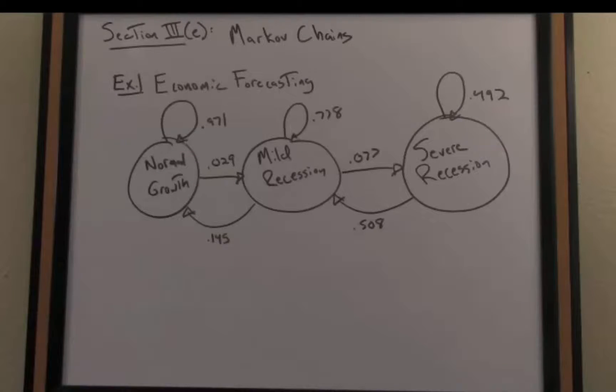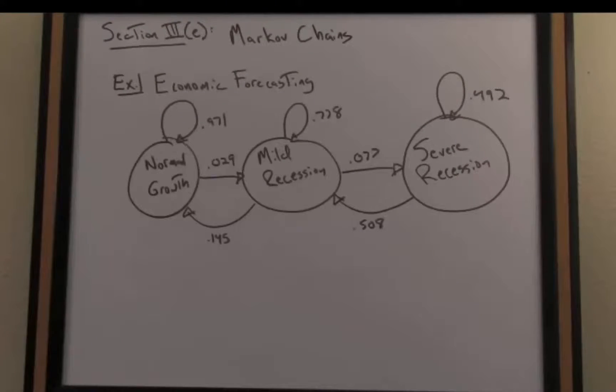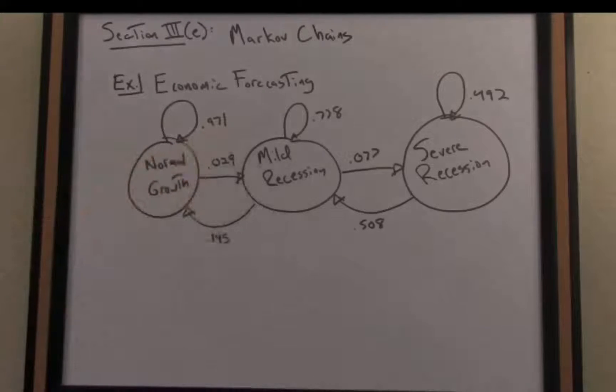Now between each of these outcomes we have an arrow directed towards another outcome and attached to each of those arrows is a weight or a probability measure. So for example if I want to determine based on this analysis the probability that if our economy is in a normal growth state it will maintain normal growth, that probability is quite high - 97.1%. On the other hand the probability that we transition from normal growth at any given year to a mild recession is 0.029 and so forth.